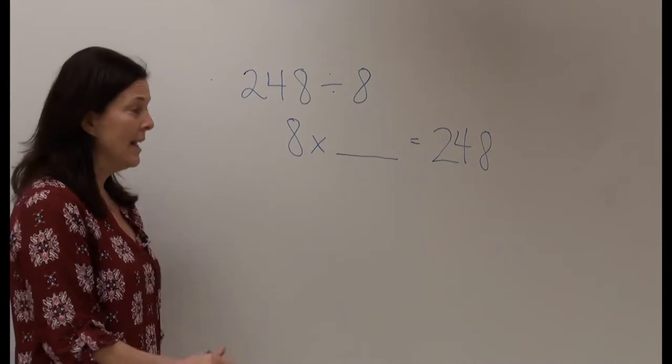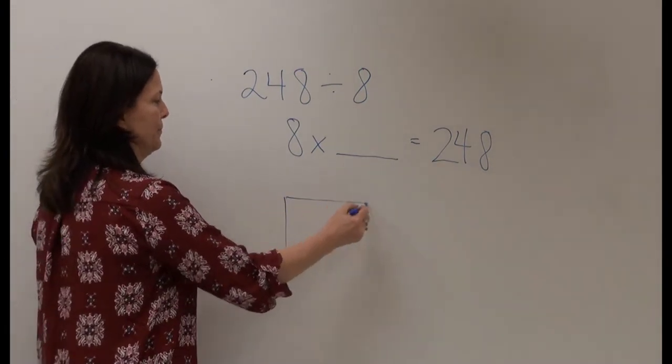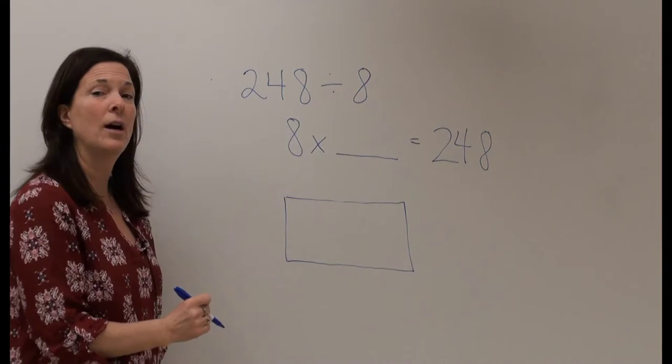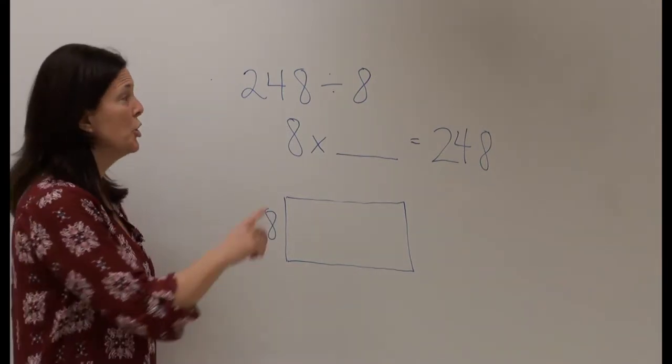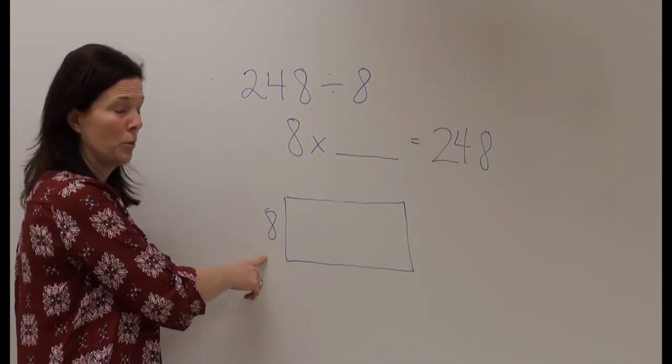So I'm going to begin by drawing a rectangle. To the left of the rectangle I'm going to draw my 8 because I am dividing 248 students into 8 rows.